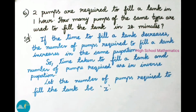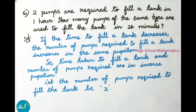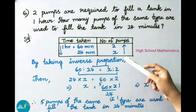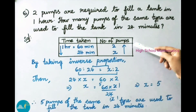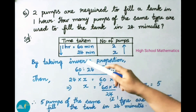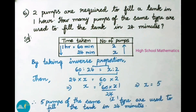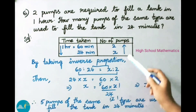Let us observe the equation. To fill a tank in one hour, two pumps are required. To fill a tank in 24 minutes, how many pumps are required — we have to find. See here, time is going to decrease, then the number of pumps required to fill the tank increases. So, time taken to fill a tank and number of pumps required are in inverse proportion. Let the number of pumps required to fill the tank be X. In tabular form we have taken time taken and number of pumps. To fill a tank in 60 minutes, two pumps are required. To fill a tank in 24 minutes, we are going to find how many pumps are required. By taking inverse proportion: 60 is to 24 is equal to X is to 2.